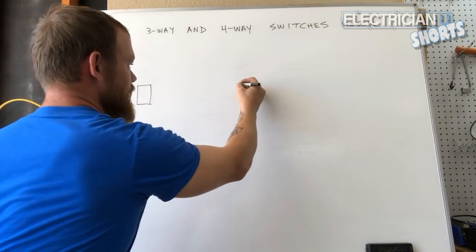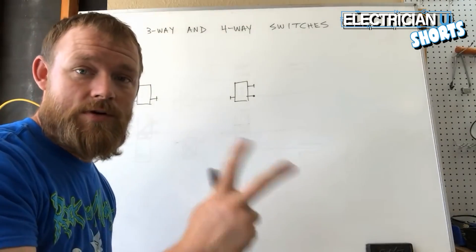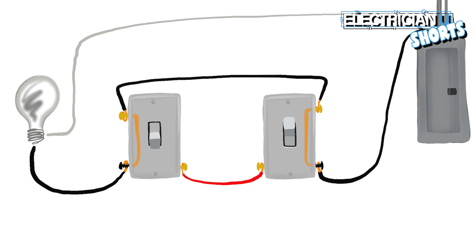How a three-way system works is there's two locations that you want to be able to switch these lights from. What I've drawn is two three-way switches.